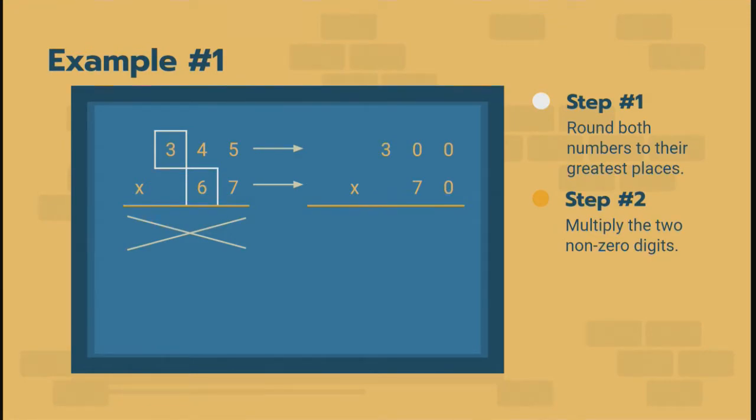Step two, multiply the two non-zero digits. Well, I see a three, and I see a seven, and I see some zeros. Well, step two says look at the non-zero digits, the three and the seven. So, I'm going to multiply those two, and I'm going to get 21.